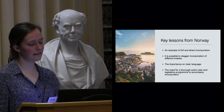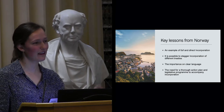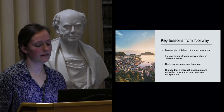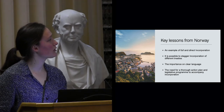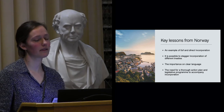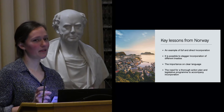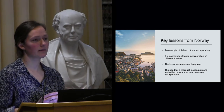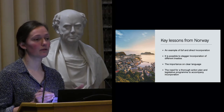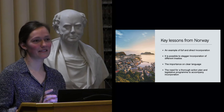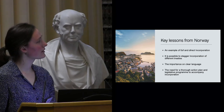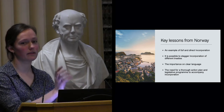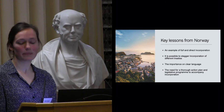To summarize the key lessons from Norway: this is an example of full and direct incorporation by transposition, as opposed to translating human rights into a newly worded bill of rights. It shows it is possible to stagger incorporation of different treaties, but that there are certain risks. The example of the Norwegian constitution and the failure to achieve justiciability for disability rights reiterates the importance of clear language. Finally, it is a good example of the need for a thorough and comprehensive action plan to accompany incorporation — incorporation is only the starting point and must be followed by solid implementation mechanisms.